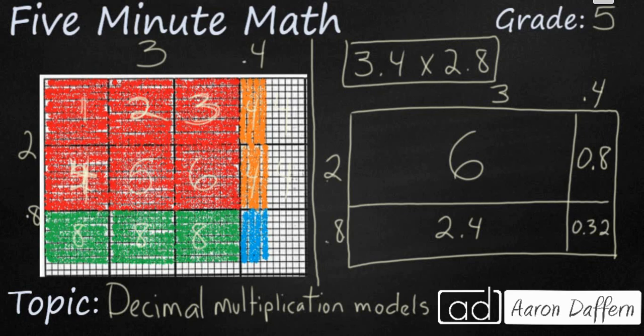Because when you multiply 2 tenths, your answer is going to be in the hundredths. And if you count, I've got 4 sets of 8 here. I've got 8, 16, 24, 32. So that's going to be my 0.32 hundredths.